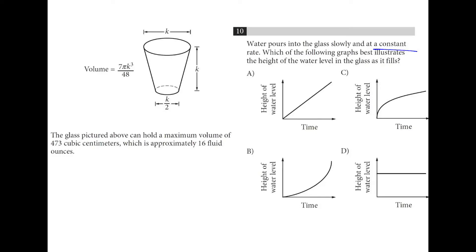If water is pouring into the glass at a constant rate, it's going to fill up the bottom faster because it's not as wide, and then as it gets toward the top, it's going to take longer to fill up because the glass gets wider. So C shows that, where it starts off faster and then slows down.